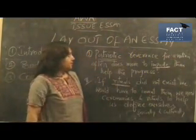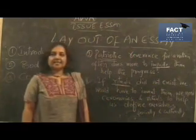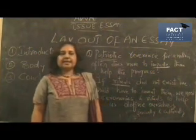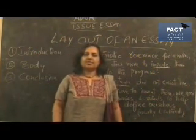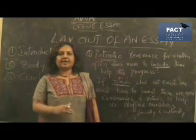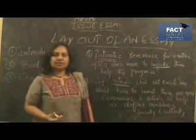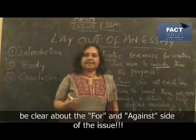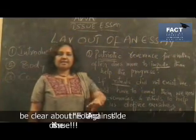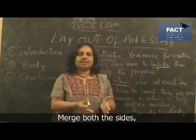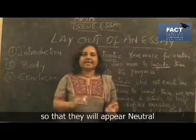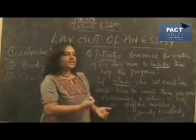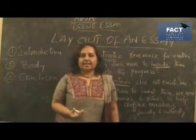Pay heed to this advice. When you come across tricky issues and find it very difficult to jot down points on either side — for or against — you should go neutral. In that case, no need to take a single stance. Be exam-savvy and try to merge the two sides, for and against, in such a way that it appears neutral and you also get the needed word count to construct the issue essay.